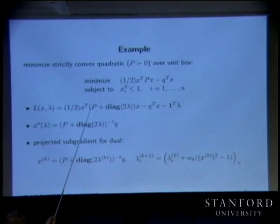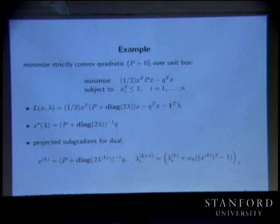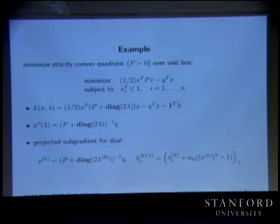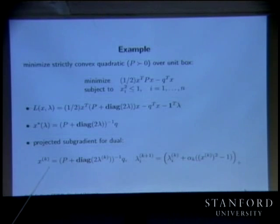Here's x star: it is (P plus Diag(2*lambda))^{-1} q. And the projected subgradient method for the dual just looks like that.